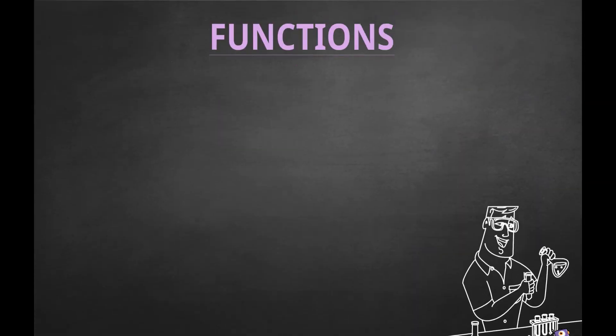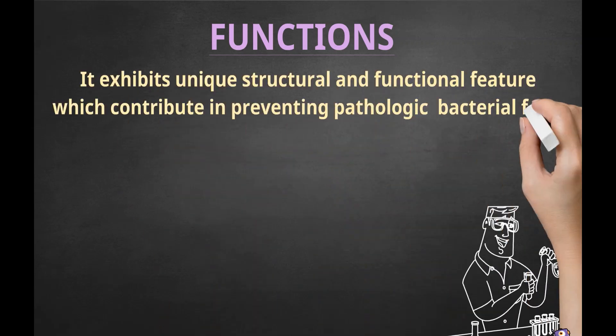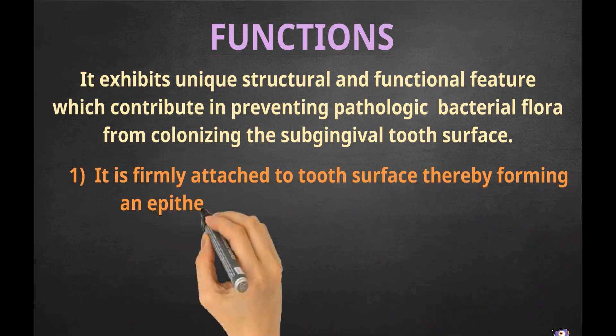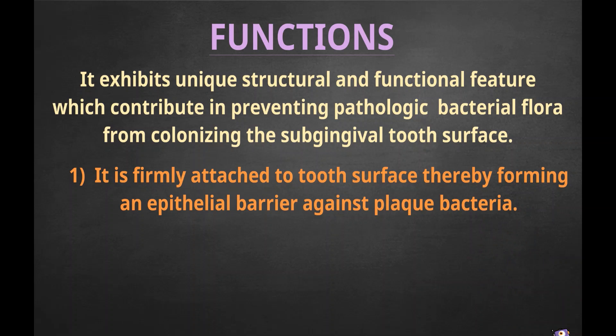Now we will look at the functions of junctional epithelium. It exhibits unique structural and functional features that contribute to preventing pathologic bacterial flora from colonizing the sub-gingival tooth surface. Firstly, junctional epithelium is firmly attached to the tooth surface thereby forming an epithelial barrier against plaque bacteria.